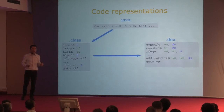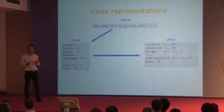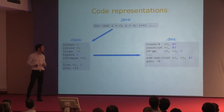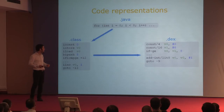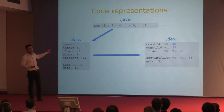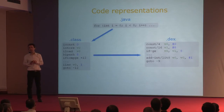The Dalvik bytecode format is similar—it has the same concepts—but it doesn't have a stack. It only uses local variables and it's a little bit more compact as a result. Still, even though the concepts are similar, the translation between the two is time-consuming, which is something you've probably noticed in your build process.